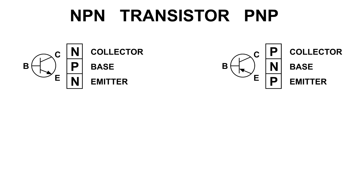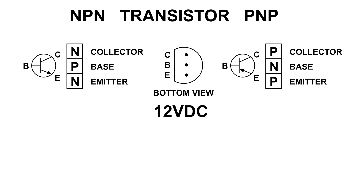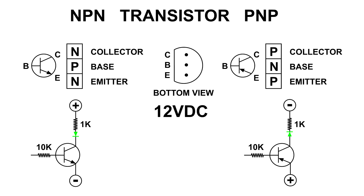Both the PNP and NPN transistor had the same lead configuration, and here is the bottom view of that configuration. I'm going to be using 12 volts DC for these two circuits. These are very simple circuits — if the right polarity voltage is applied to the transistor the LED will light, and if the wrong one or no voltage is applied it will be completely off. This next demonstration will show which polarity of voltage turns on the NPN and PNP transistor.